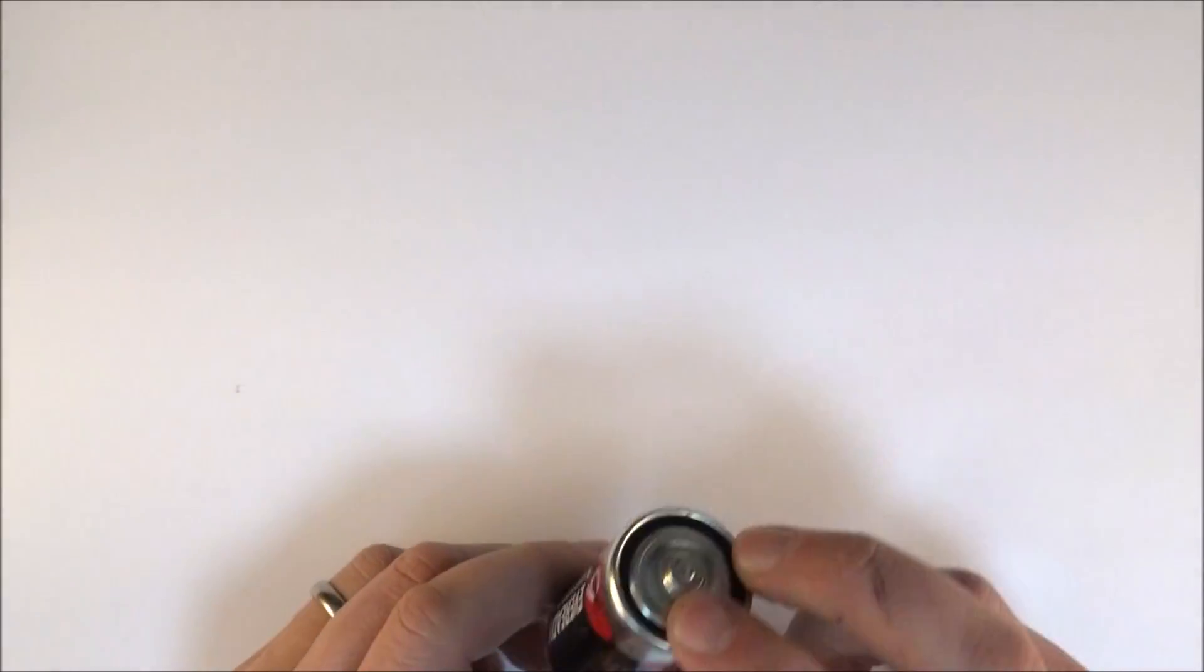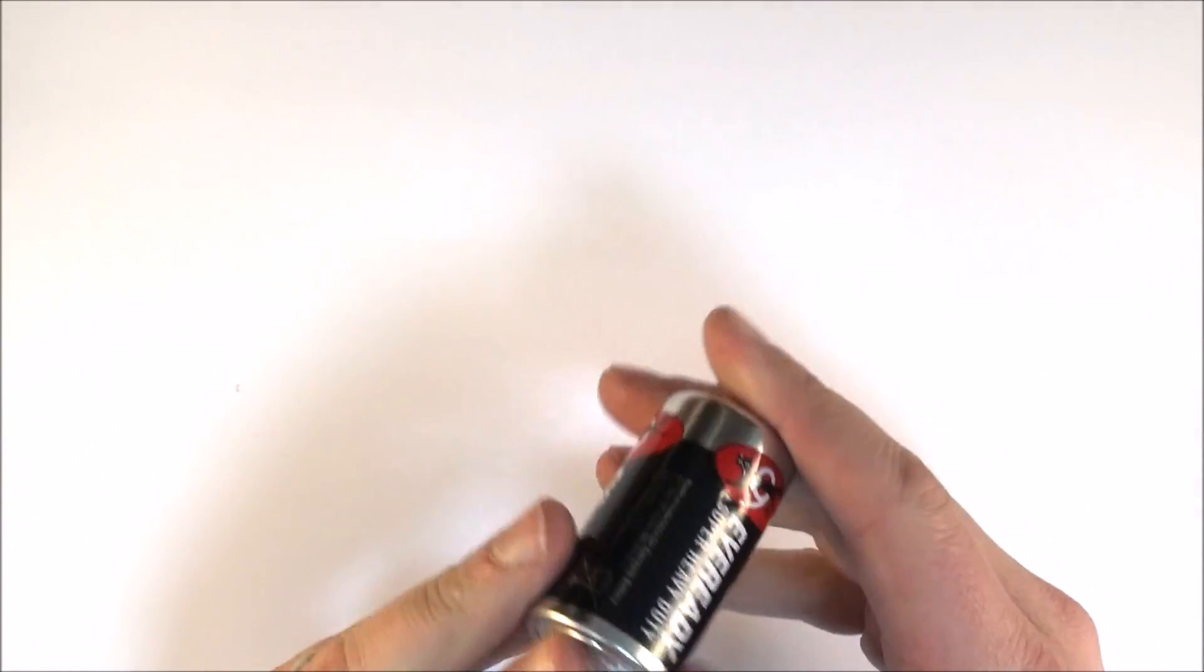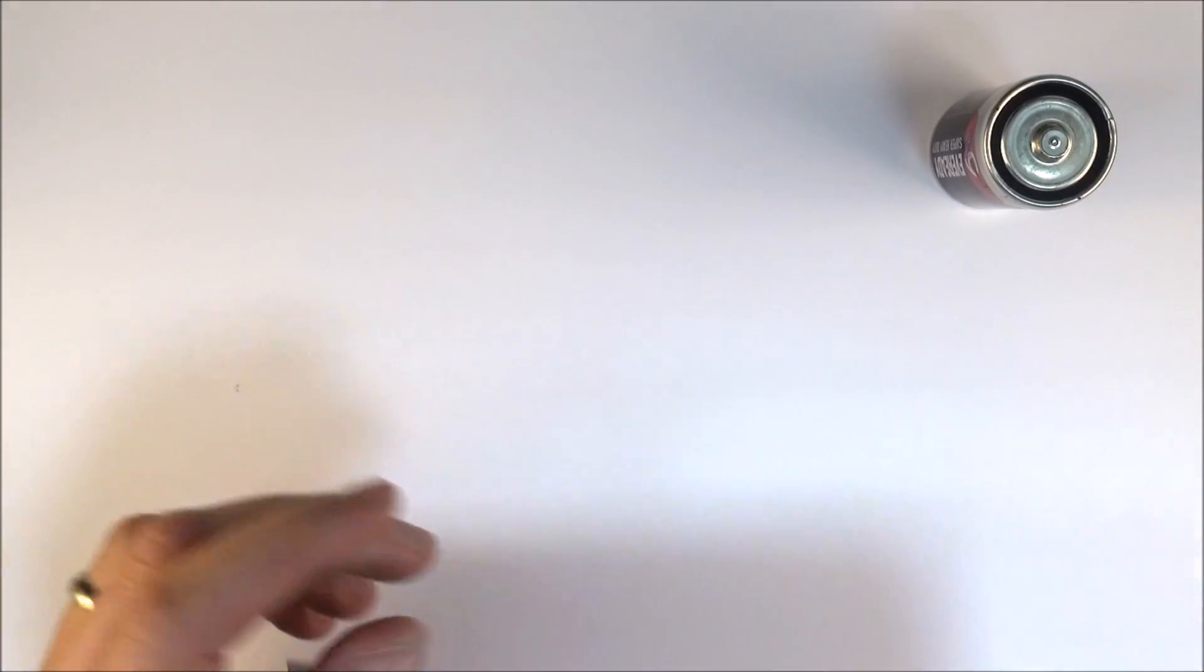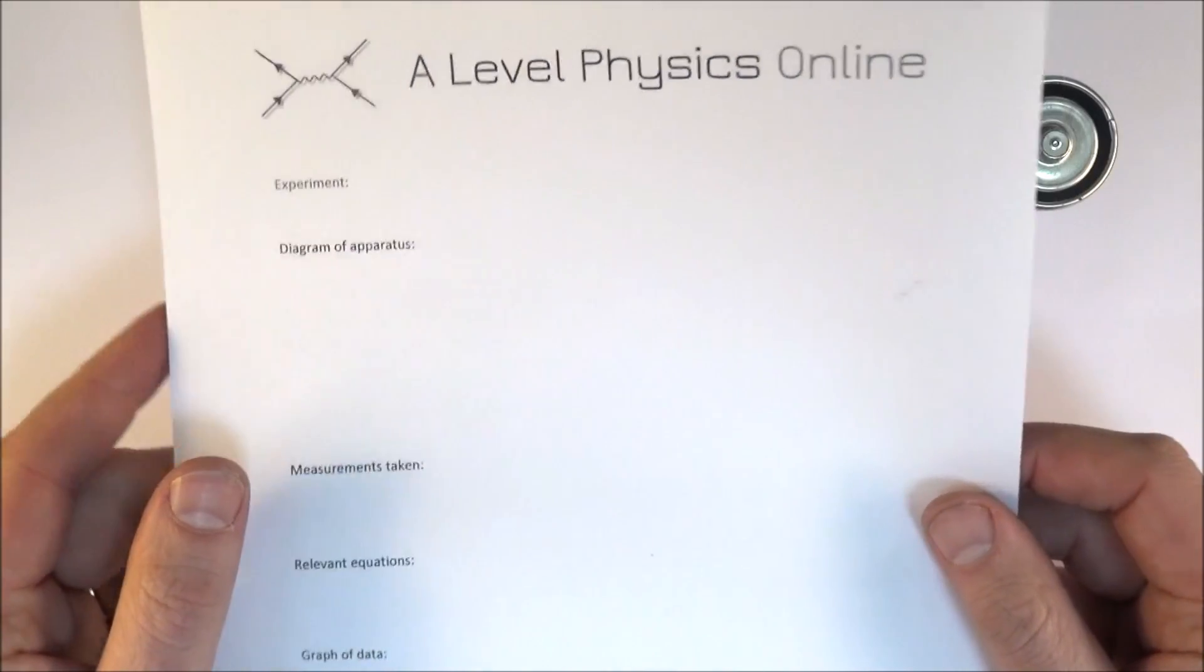Now whichever exam board you study there are certain experiments that you need to know about, perhaps maybe the internal resistance of a cell. And a way to kind of maybe think about these as you're planning your revision is to think about some of the following headings.